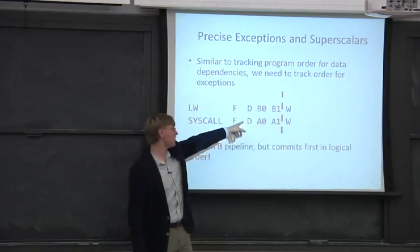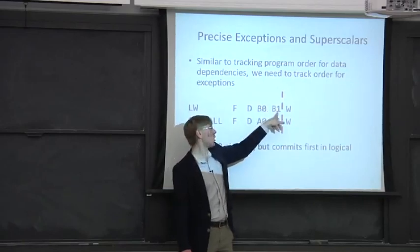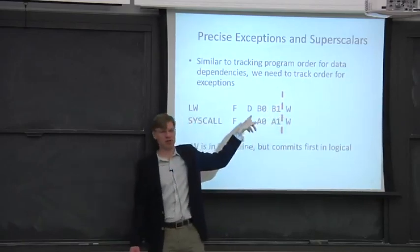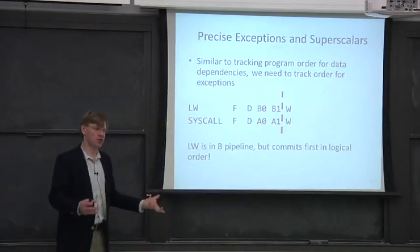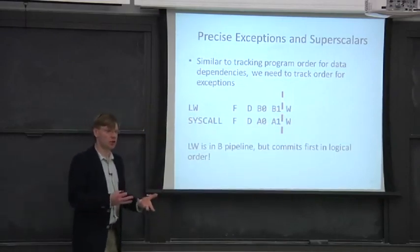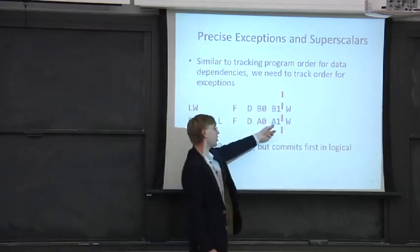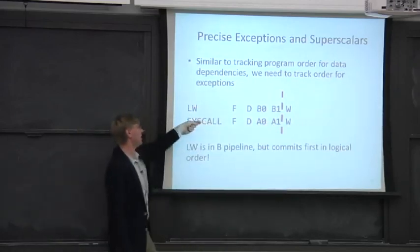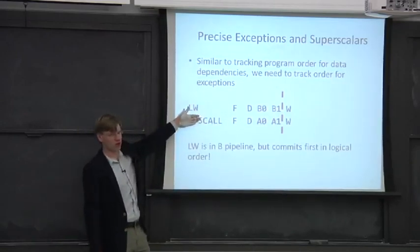Then you have to make a decision of, oh well, the A pipe actually just took an interrupt. In program order, the B pipe is the first instruction going down the pipe. So at the end of the pipe there, you're going to have to make some logical decision and have to have a little bit of control logic to make sure that you're not going to take an interrupt for the syscall and kill the load instruction before the syscall.